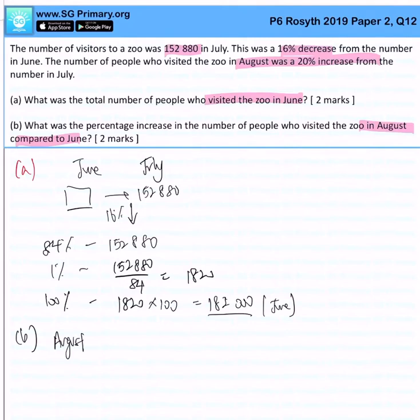We will take 152,880 divided by 100 times 120. That will give me the number of visitors that visited the zoo in August, and the answer is 183,456. To find the percentage increase...